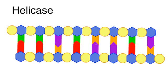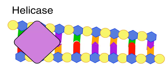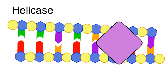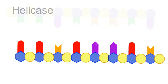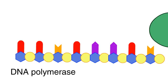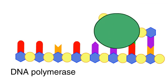There are several important enzymes involved in DNA replication. Helicase separates the original strands of DNA. Then, DNA polymerase adds the nucleotides to make the new strand of DNA.